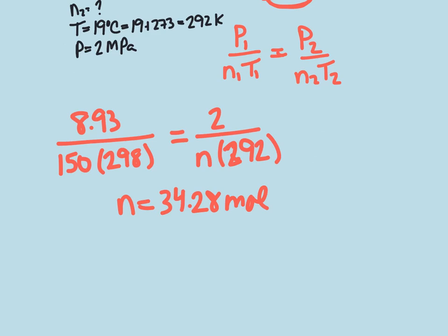So to figure out the mass remaining, we're going to take our moles, which is 34.28 moles of argon, and using a periodic table,